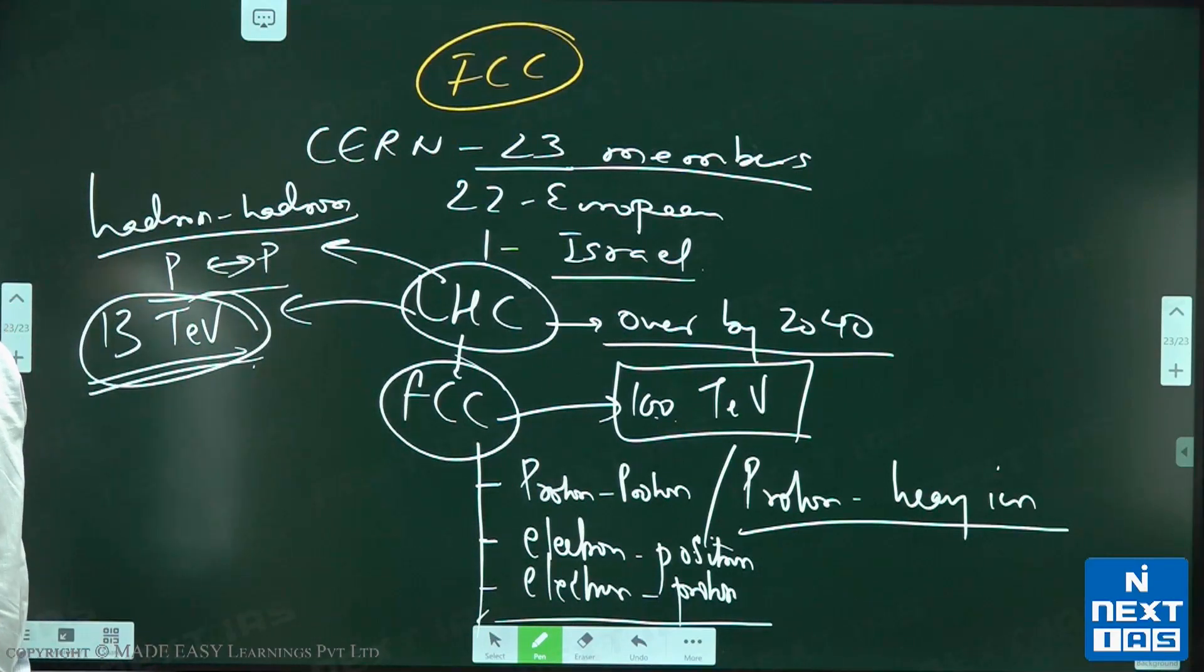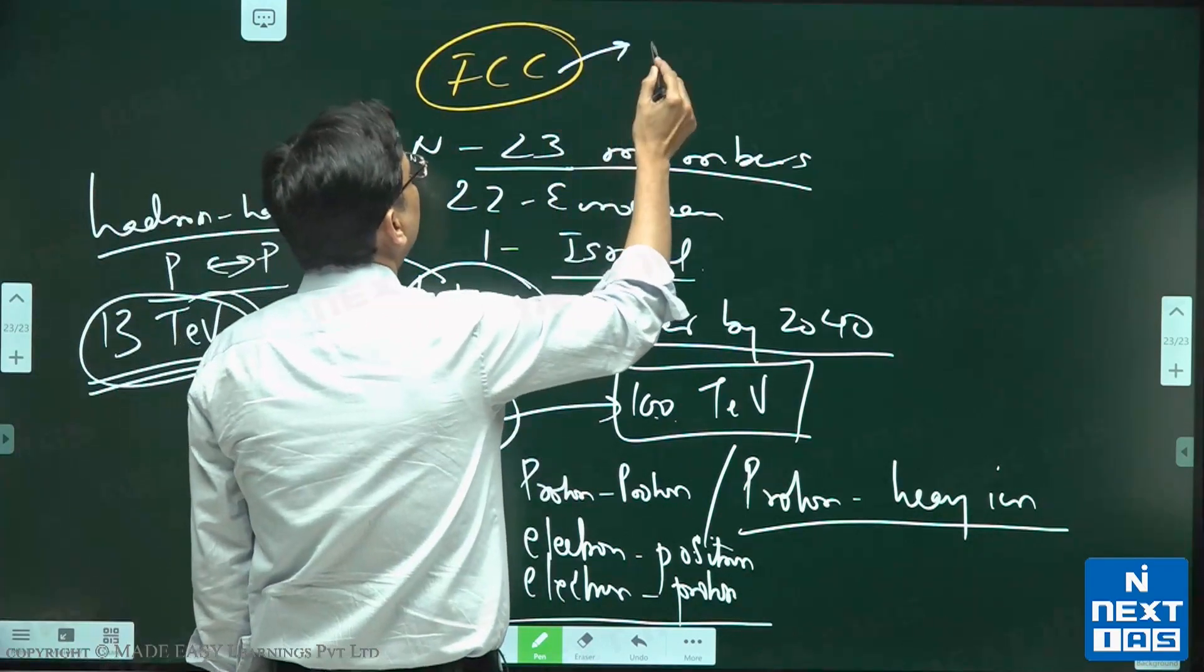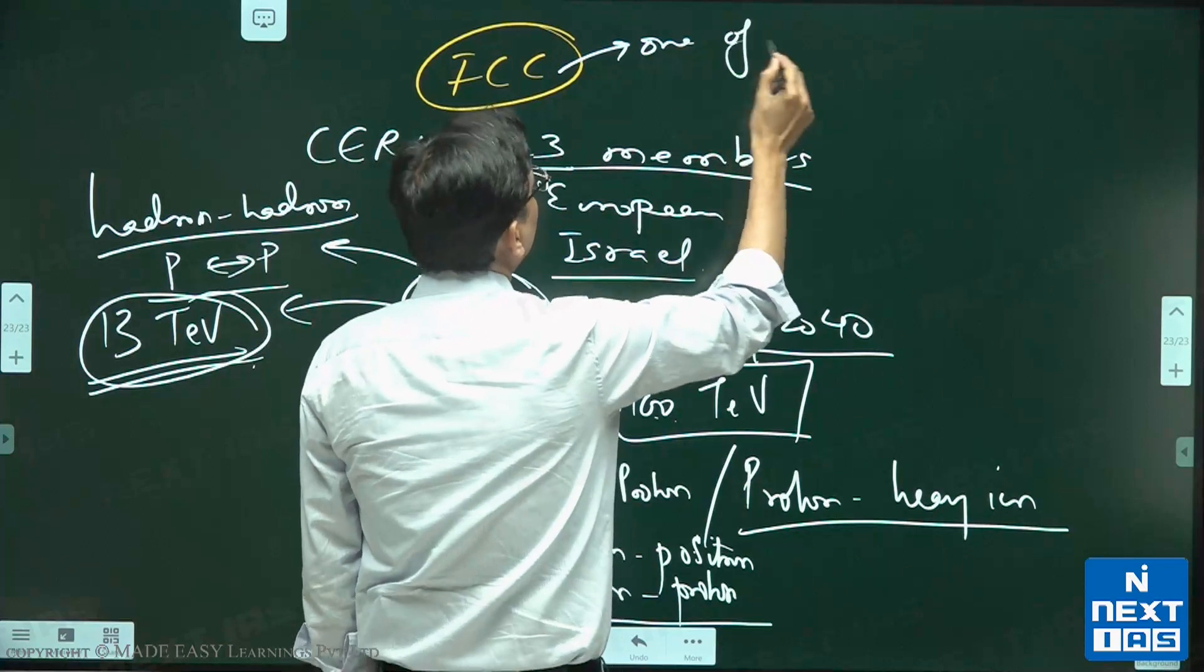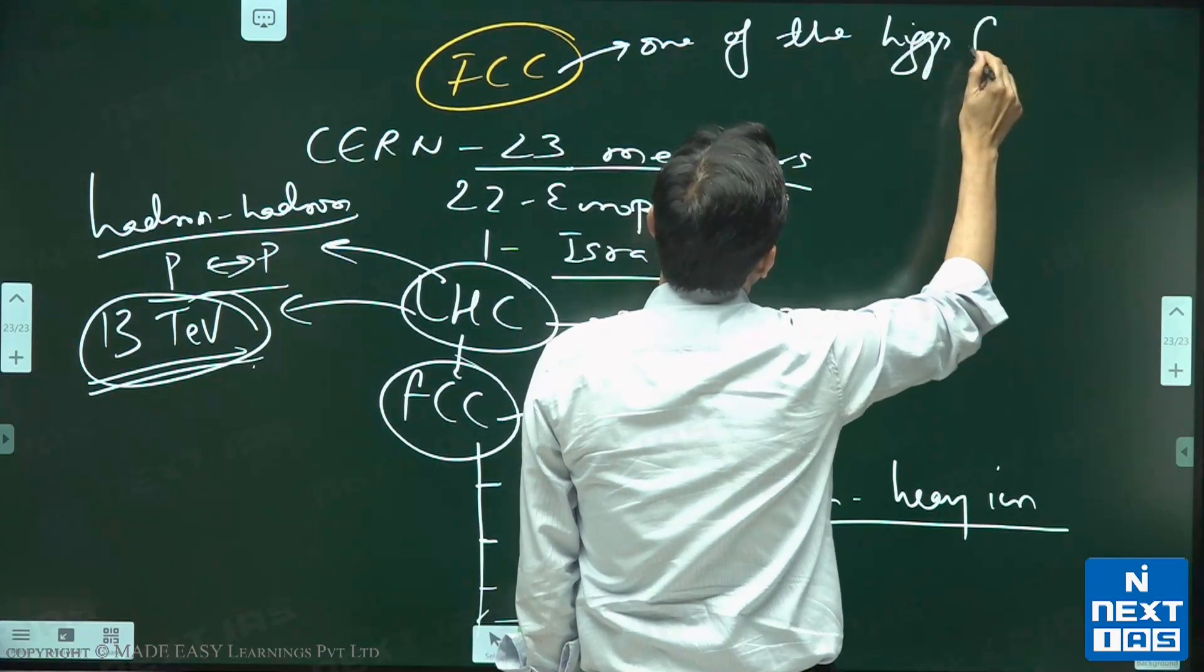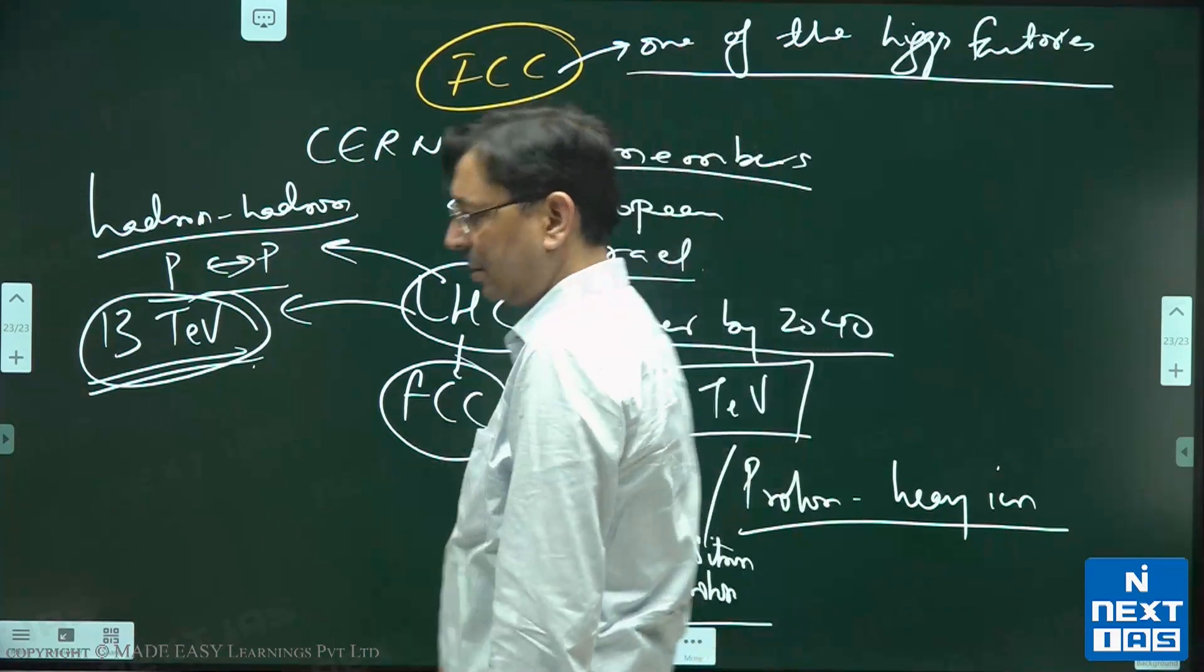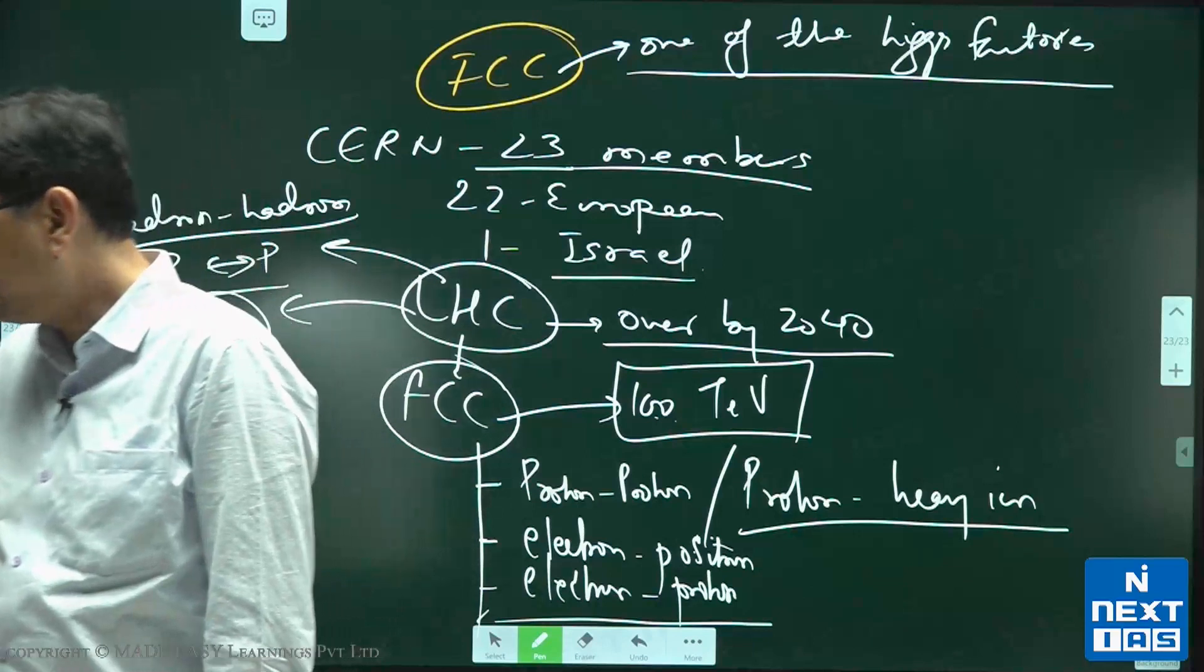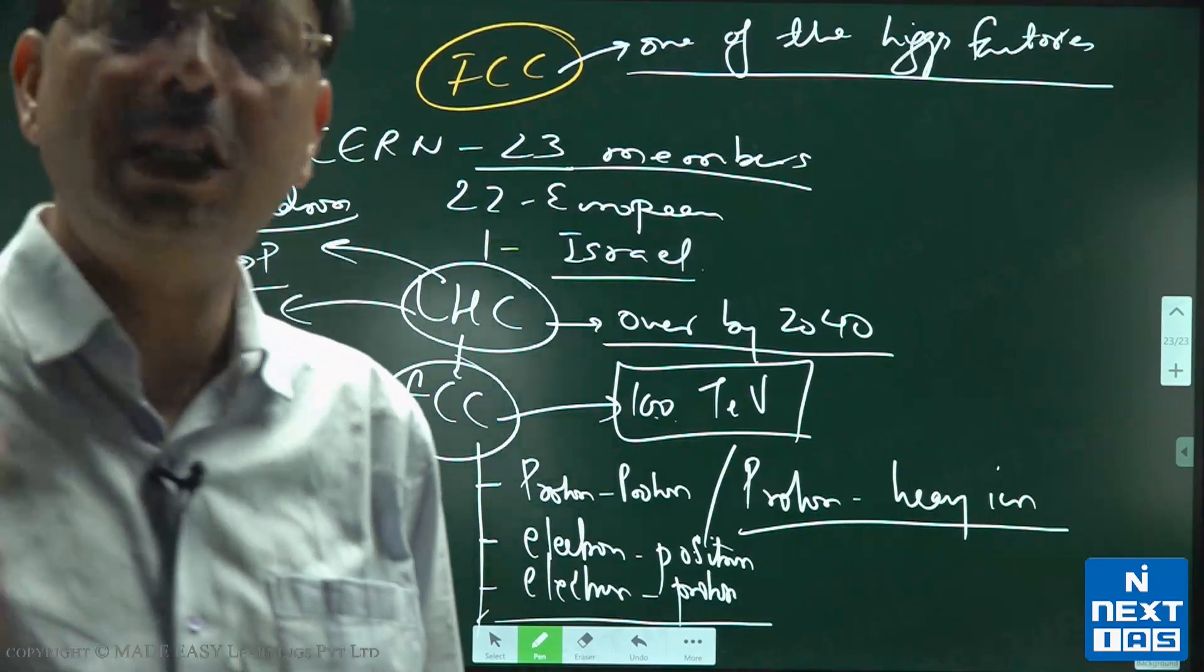You need to keep one thing in mind: this FCC will be one of the Higgs factories. Higgs factories means they will produce Higgs boson in a massive number.